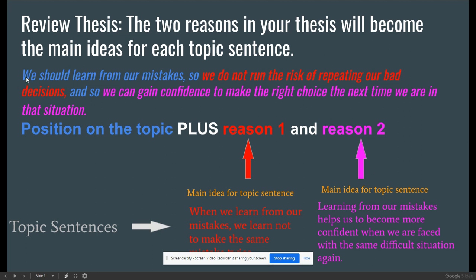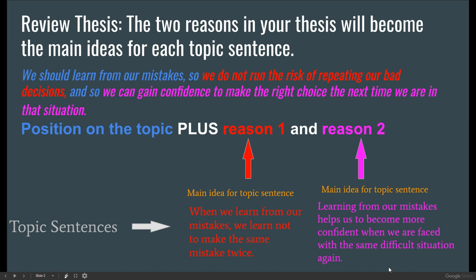So, here's my example. We should learn from our mistakes — that's my position on the topic. Reason one: so we do not run the risk of repeating our bad decisions. And reason number two: so we can gain confidence to make the right choice the next time we are in that situation. This is my topic sentence number one and topic sentence number two in each body paragraph. So I already know what my topics of each paragraph are going to be based on my reasons in my thesis.